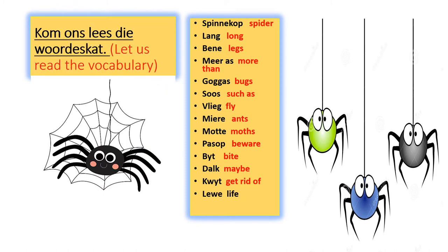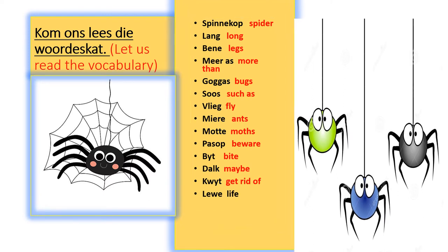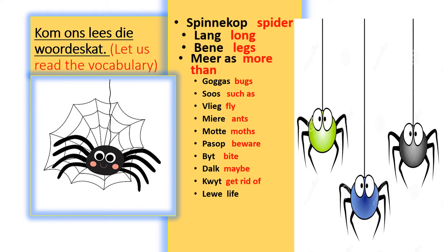Let us read the vocabulary. Spinnakop — Spider. Lank — Long. Pootjies — Legs. Mier as meer — more than.